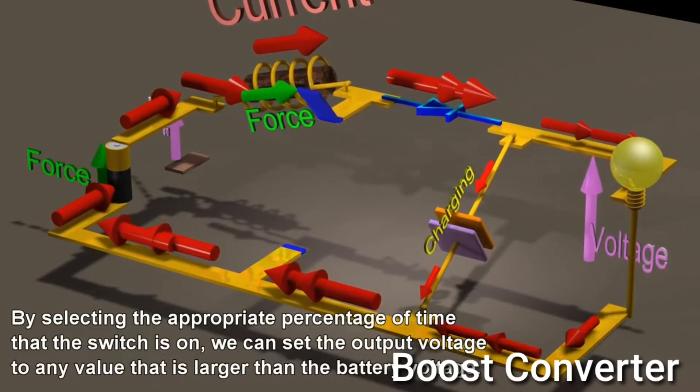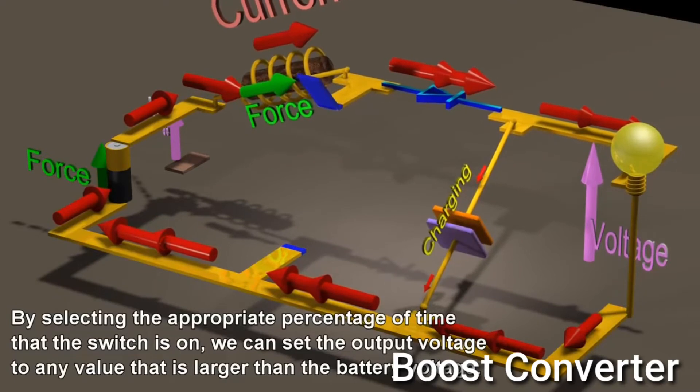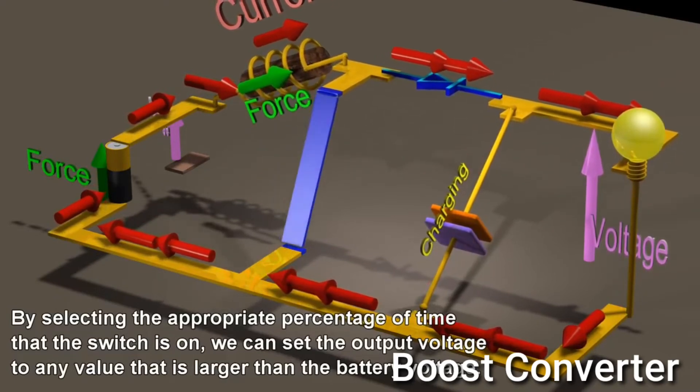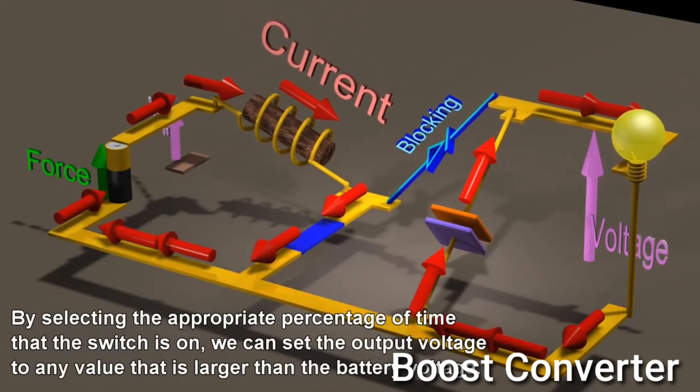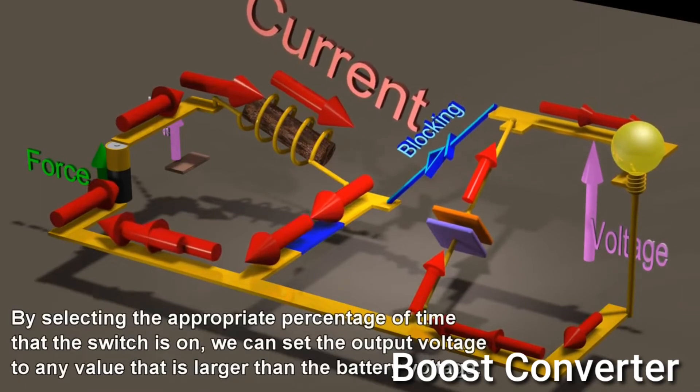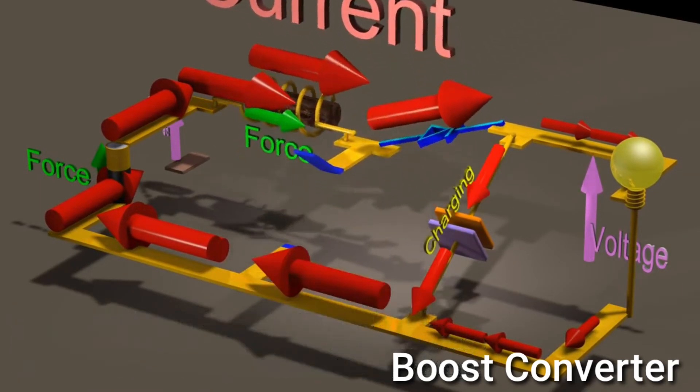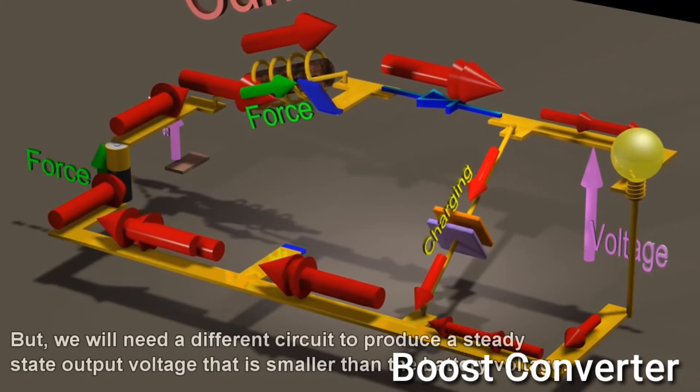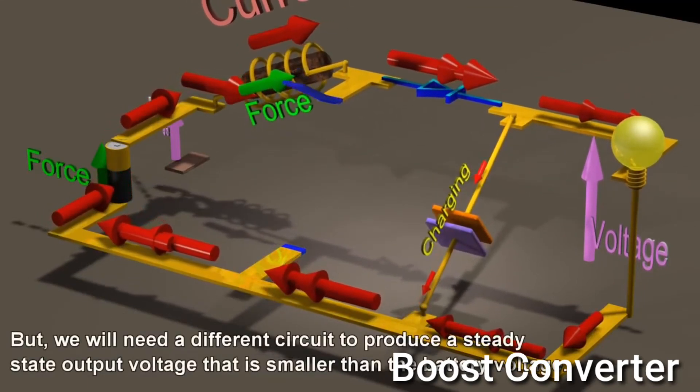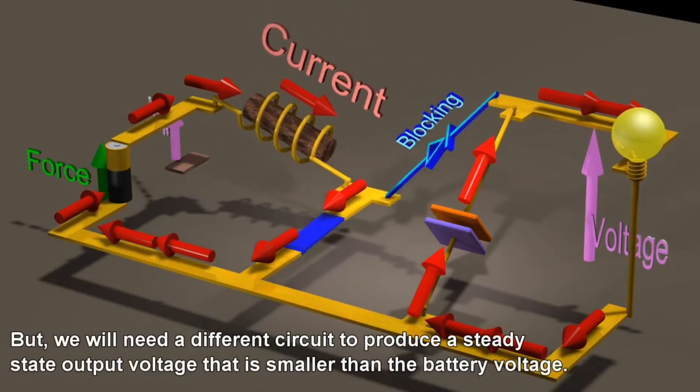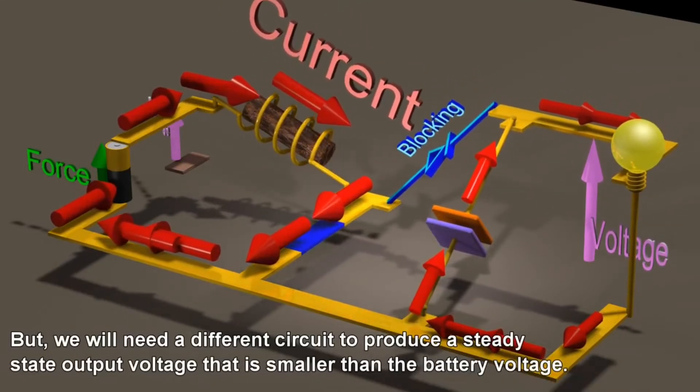By selecting the appropriate percentage of time that the switch is on, we can set the output voltage to any value that is larger than the battery voltage. But, we will need a different circuit to produce a steady state voltage that is smaller than the battery voltage.